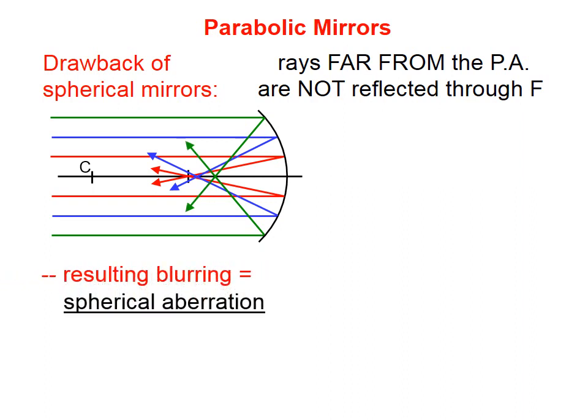This gives us a blurred image and we call that phenomenon spherical aberration. Any spherical mirror is going to be a small mirror. You'll never see a really large mirror that's spherical because of spherical aberration.